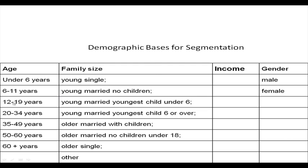We now come to the demographic basis of segmentation. Demographics include age, family size, income, gender, etc. Age groups could be under 6 years, 6 to 11 years, 12 to 19 years, and so on. Family size categories include young single, young married with no children, married with youngest child under 6, young married with youngest child 6 or over, older married with children, older married with no children under 18.